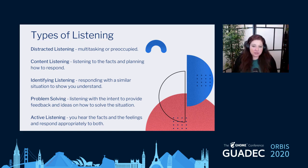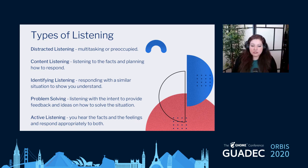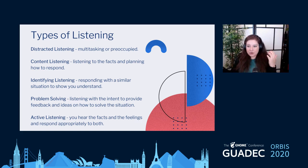The first type is distracted listening — this is when you're multitasking or preoccupied and not fully there with the person. There's also content listening, which is listening to the facts while planning how to respond. You might hear something and start formulating your answer, and in the process you're not really listening to what else they're saying or encouraging them to keep talking.